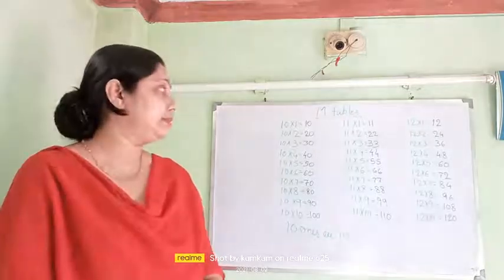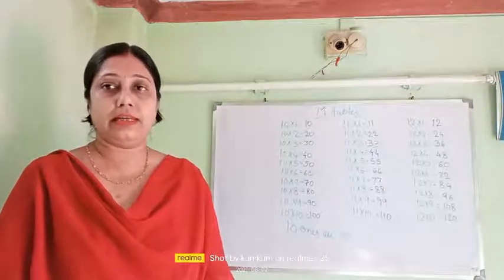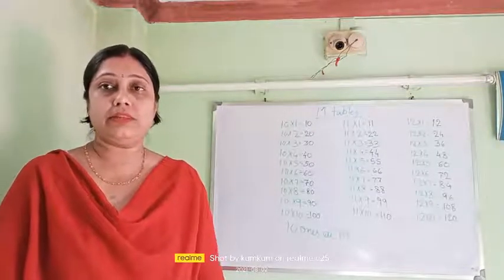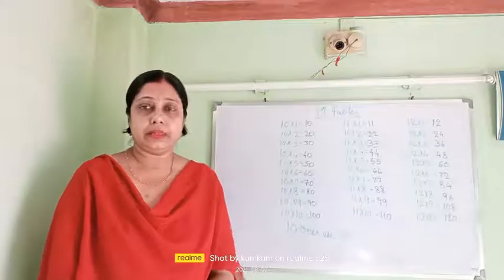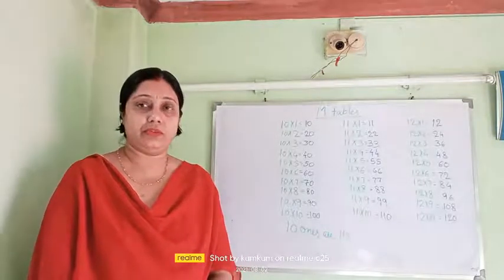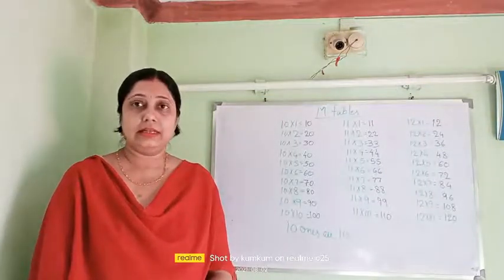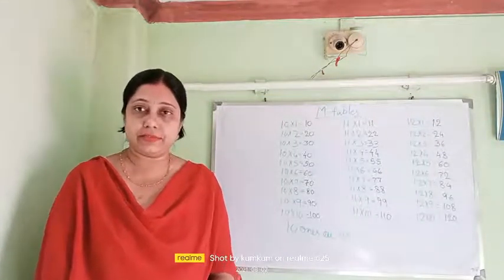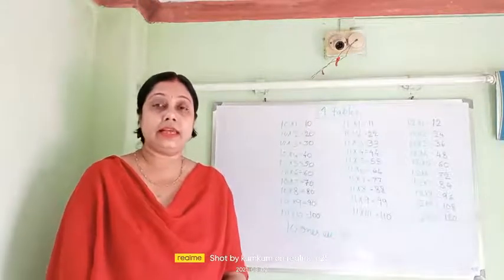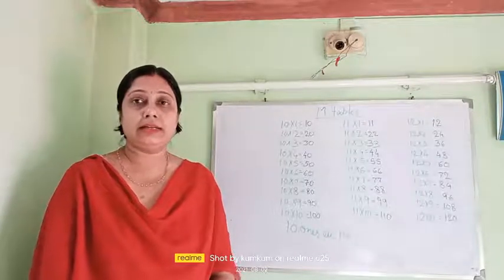Let us go to multiplication table 11. 11 ones are 11. 11 twos are 22. 11 threes are 33. 11 fours are 44. 11 fives are 55. 11 sixes are 66. 11 sevens are 77. 11 eights are 88. 11 nines are 99. 11 tens are 110.